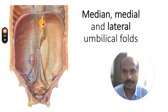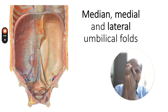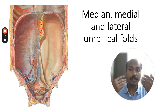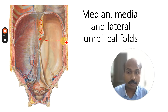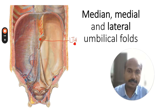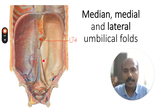In the supra-umbilical region you can see the falciform ligament — a sheet-like membrane connecting the anterior abdominal wall and the diaphragm to the anterior surface of the liver. In its lower free border is the cord-like ligamentum teres hepatis. I made a previous video on these structures which you can refer to.